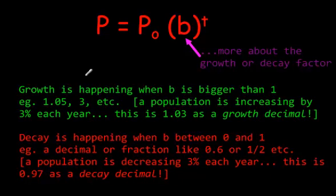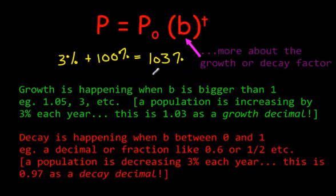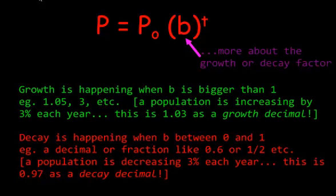So how did they come up with the 1.03? Well, remember, if the population is growing by 3% every year, then you start with 100%, right? And if it grows 3%, then you are actually at 103%. So you change that into a decimal, and that's how you come up with the 1.03.